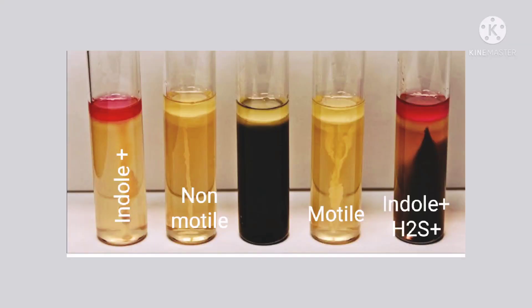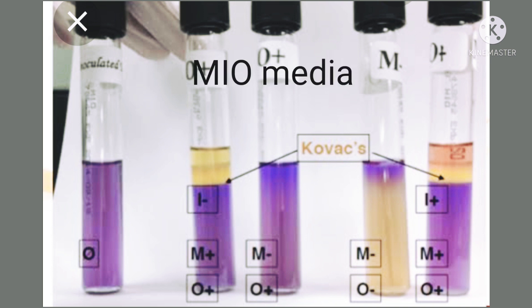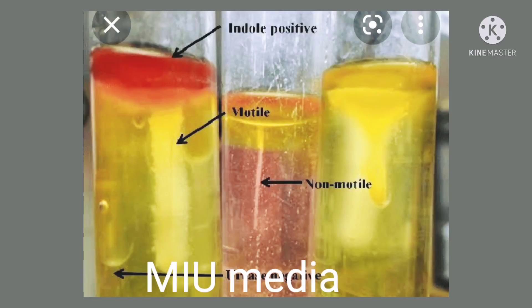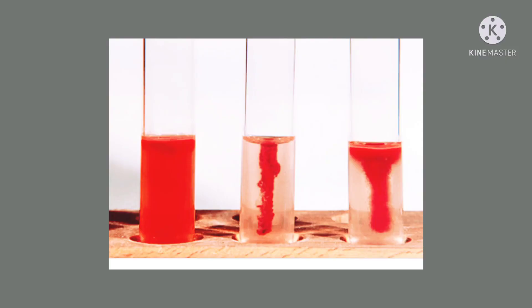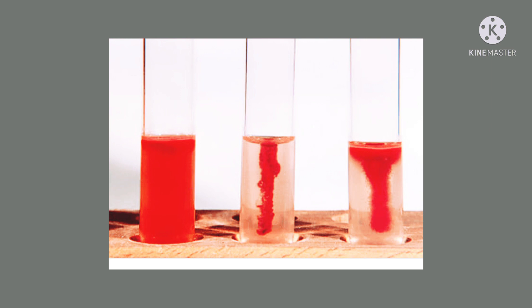Other motility media include sulfide indole motility (SIM) medium for H2S production, indole production, and motility; motility indole ornithine (MIO) medium which also detects ornithine decarboxylation; motility indole lysine medium for lysine decarboxylation; and motility indole urease medium for urea hydrolysis. The TTC medium (2,3,5-triphenyltetrazolium chloride at 0.005%) causes bacteria to reduce TTC and produce a red pigment called formazan — this reddish pigment spreads out in motile bacteria.